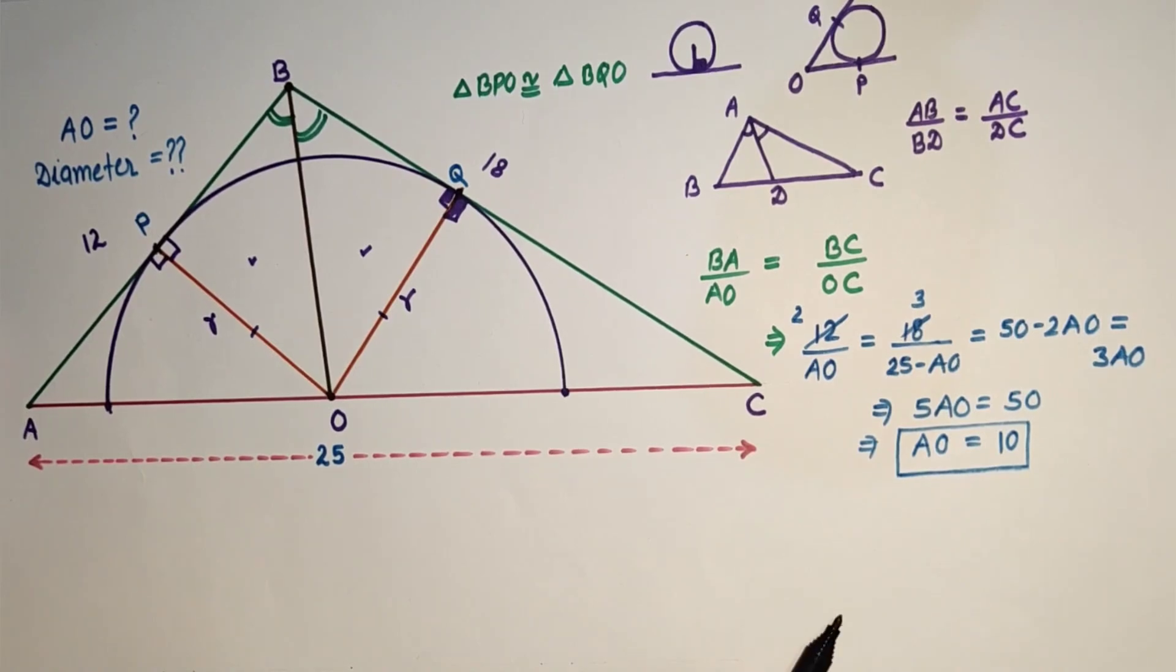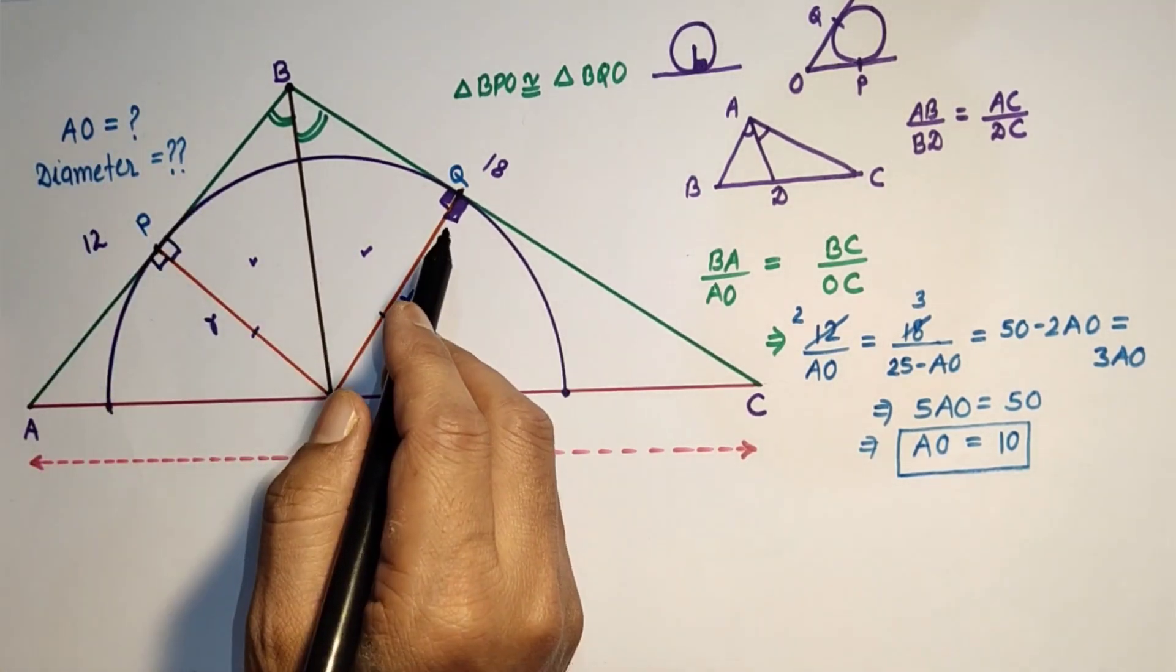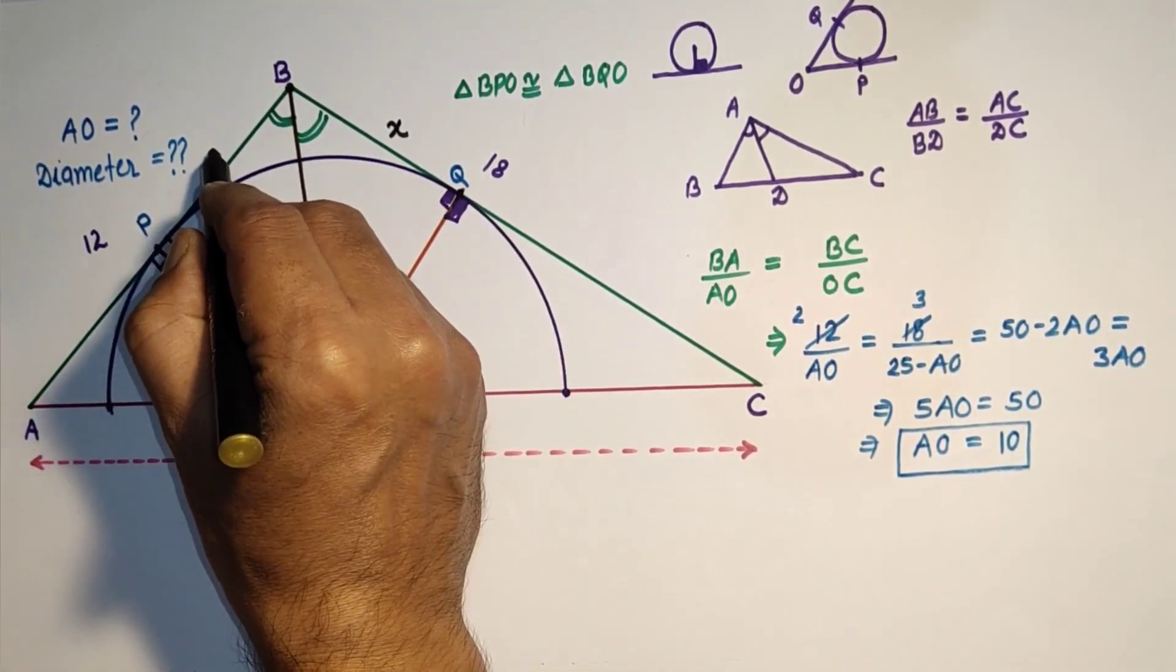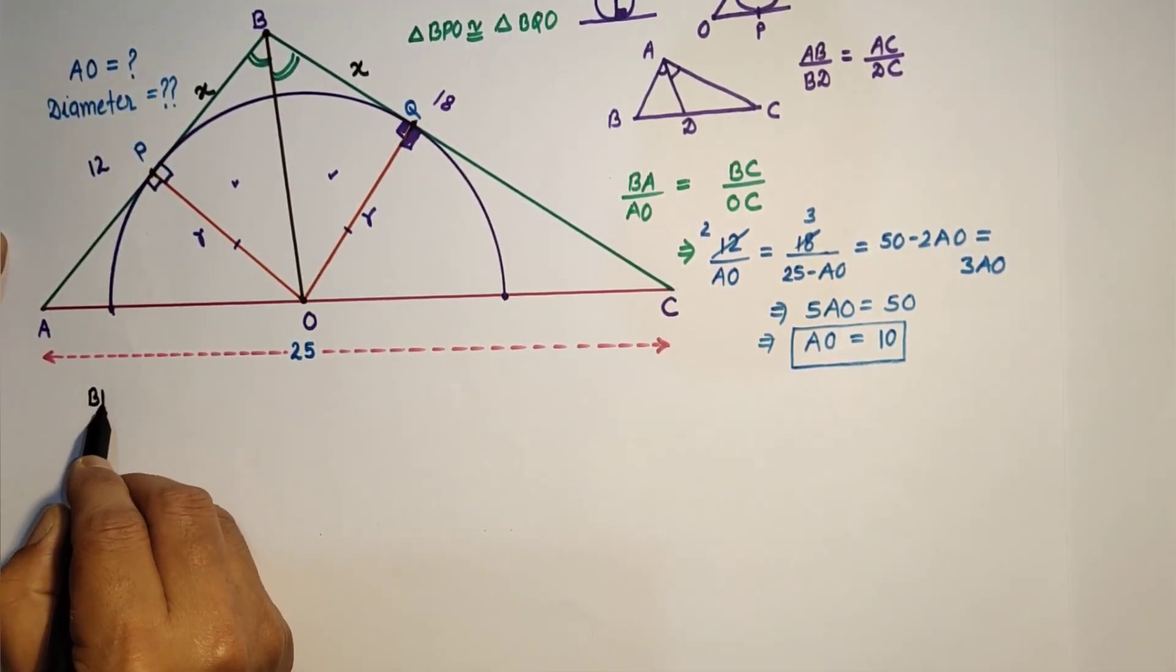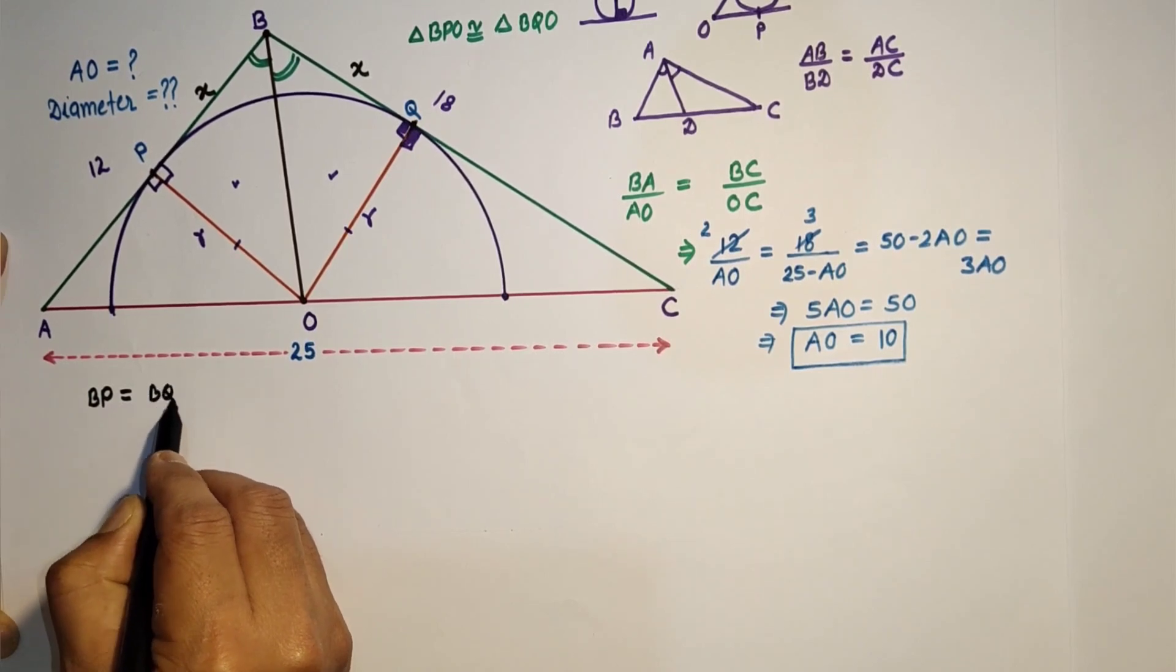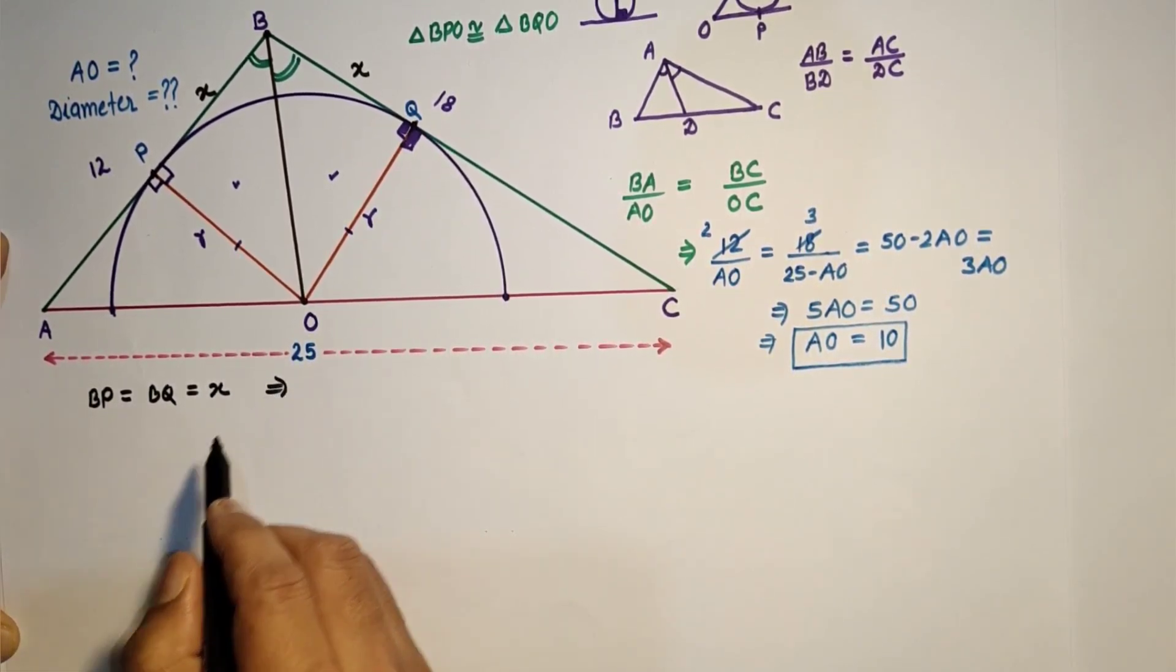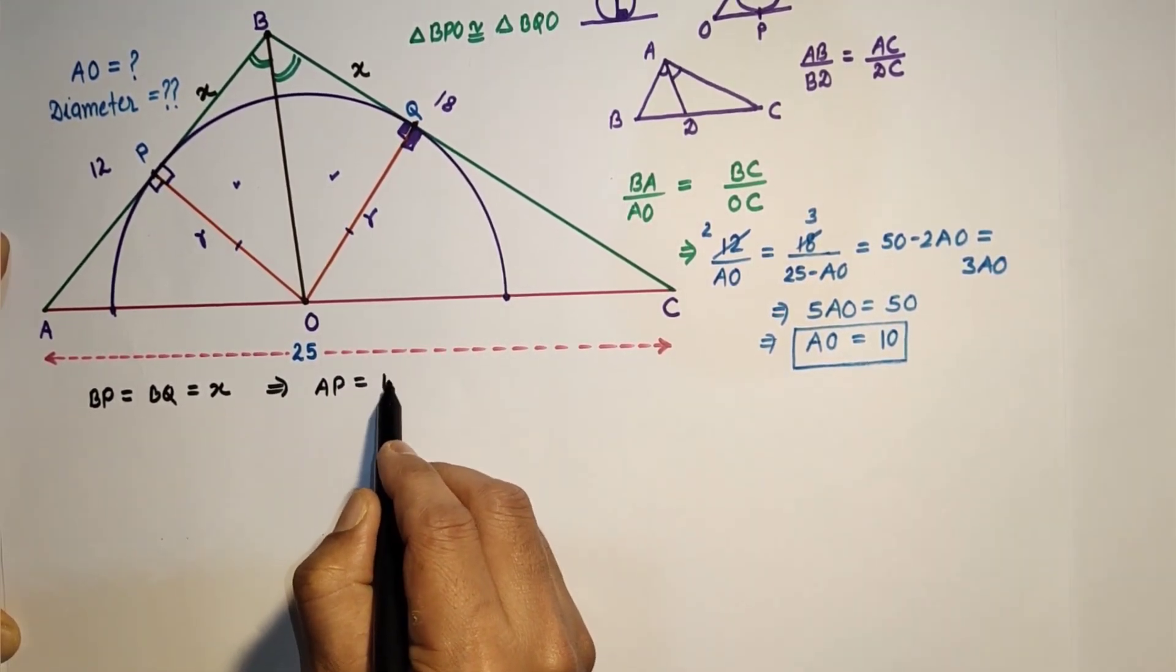Now to get the diameter, let us suppose this BP and BQ are each equal to X. So BP is equal to BQ is equal to X, and that means AP is equal to 12 minus X.